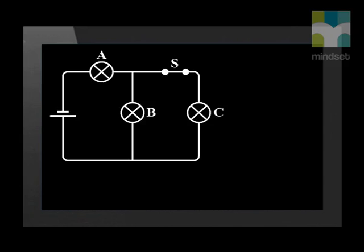Parallel and series resistors often occur in the same circuit. Let's look at an example. Here, three identical light bulbs A, B and C are connected in an electric circuit.